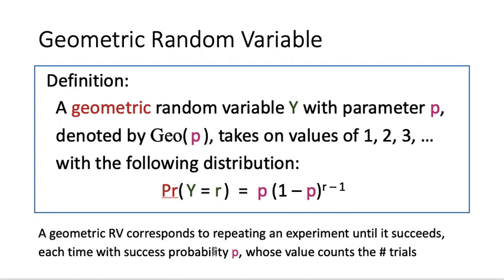Intuitively, a geometric random variable corresponds to repeating a certain experiment until it succeeds. Each time the experiment will succeed with probability p, and the value of the random variable counts the number of experiments we have performed — the number of trials we have made. So if the experiment is successful in the first trial, then the value of Y will be equal to 1.